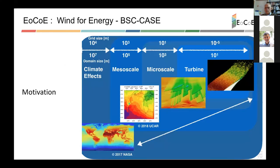Why do we need exascale for wind energy? There are a lot of different temporal and spatial scales in wind energy simulations — from the movement of the wind and climate on the whole Earth, to mesoscale simulations used by climatologists to predict weather that affects wind turbines, to CFD micro-scale simulations of flow over a wind farm. Finally, at the smallest scale, we have simulations at the wind turbine level where mesh sizes can be less than a millimeter if you want to simulate the flow over the turbine blade accurately.